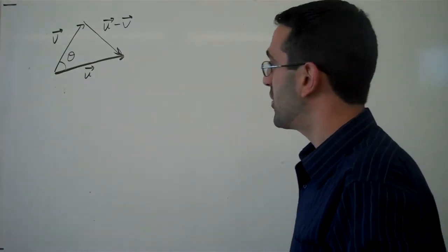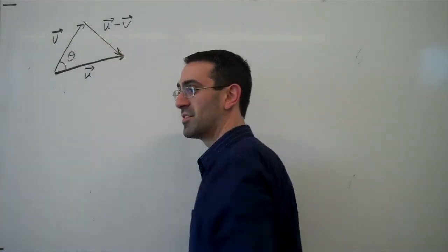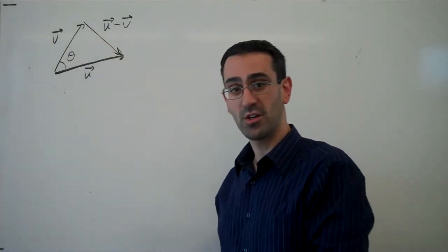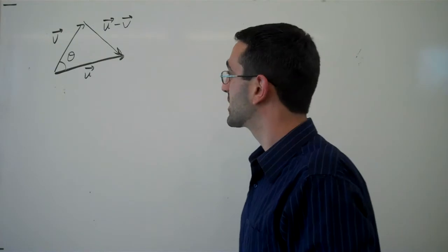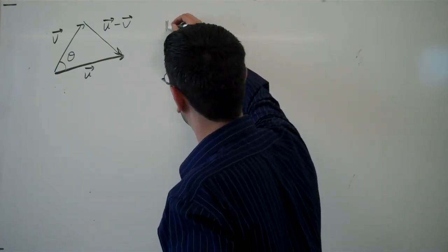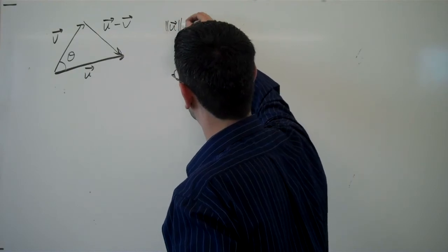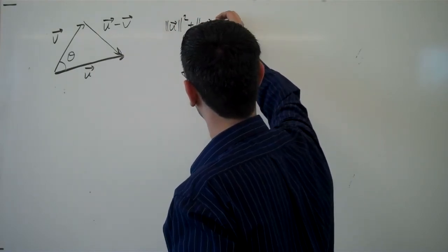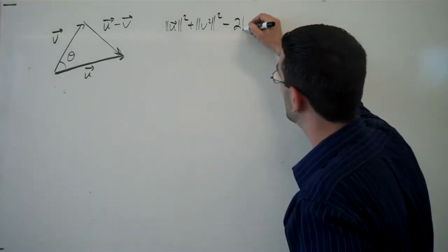Now we can use the magnitudes of these three vectors along with law of cosines from trig to come up with a relationship. We can say that the magnitude of u squared plus magnitude of v squared minus 2,